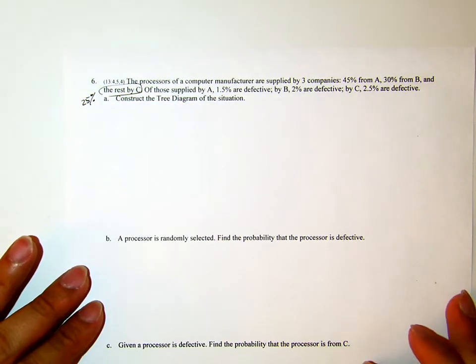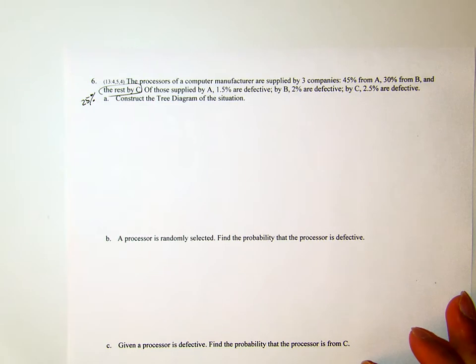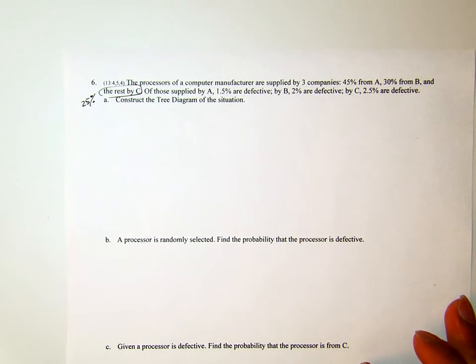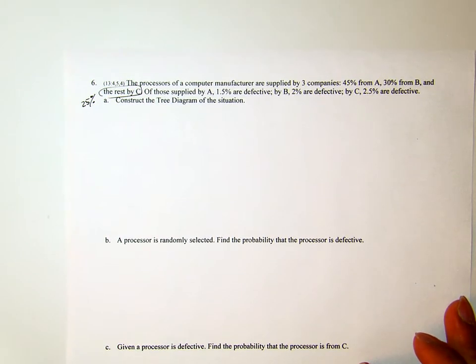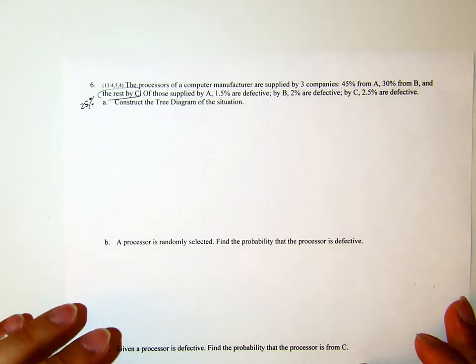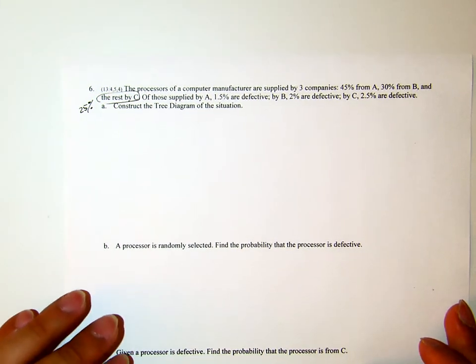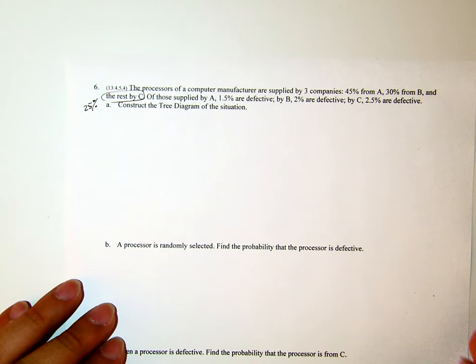Of those supplied by A, 1.5% are defective; by B, 2% are defective; by C, 2.5% are defective. Part A: construct the tree diagram of the situation.